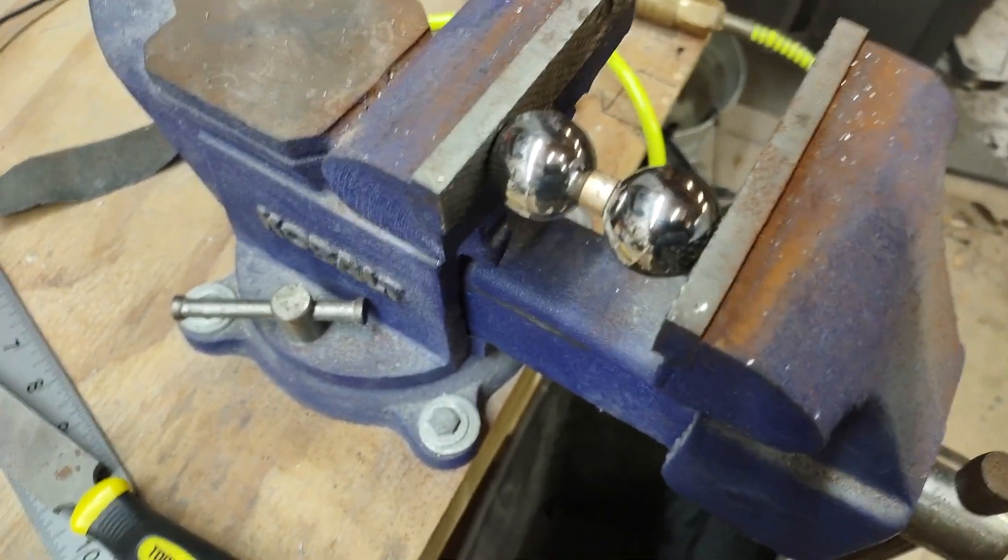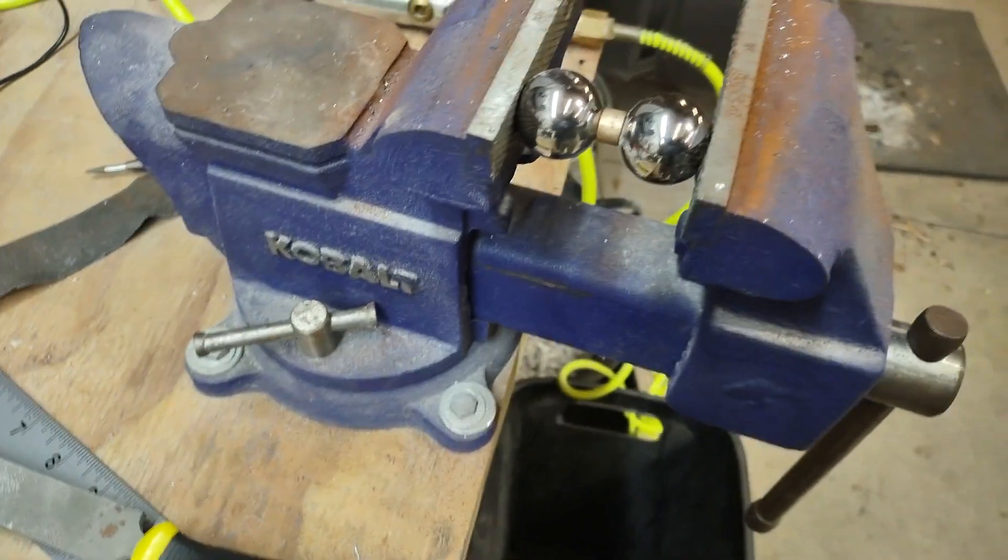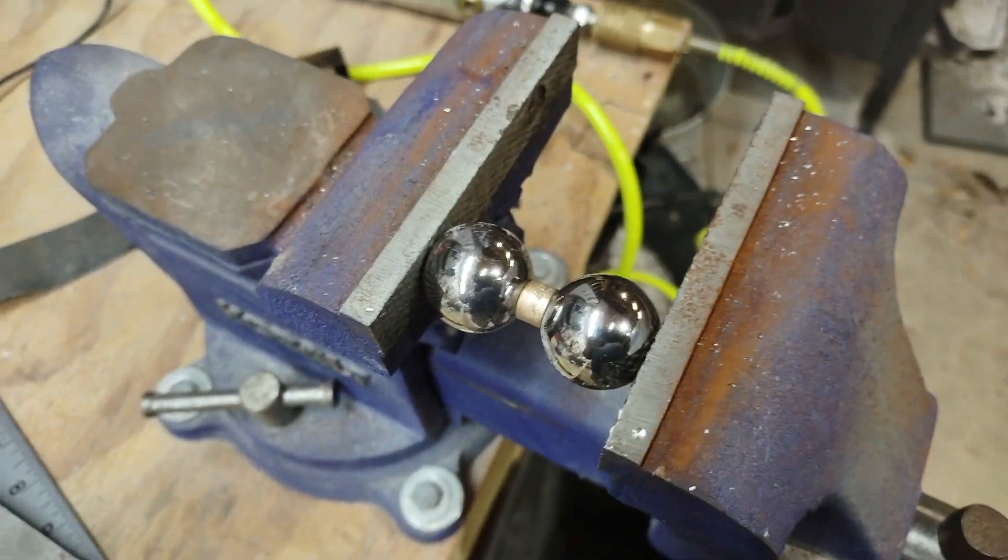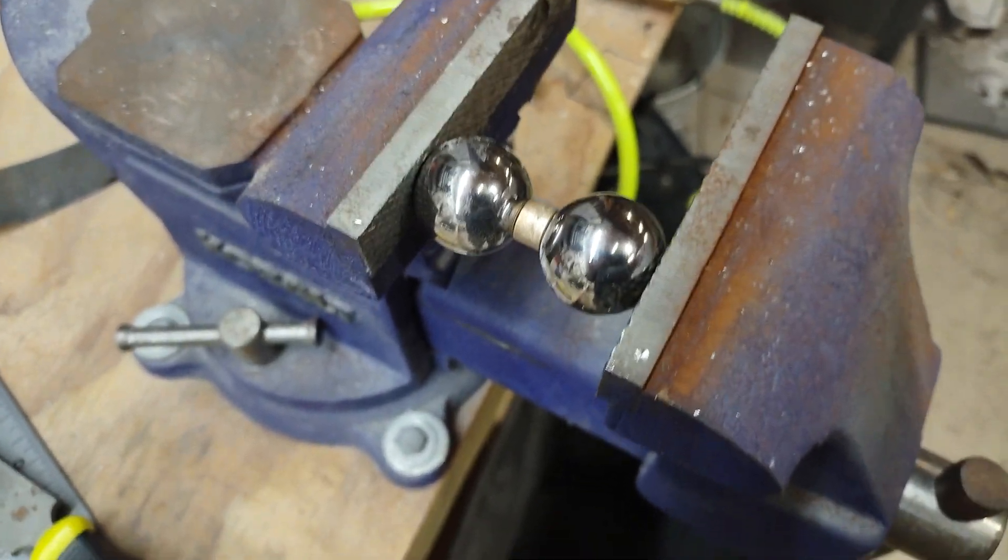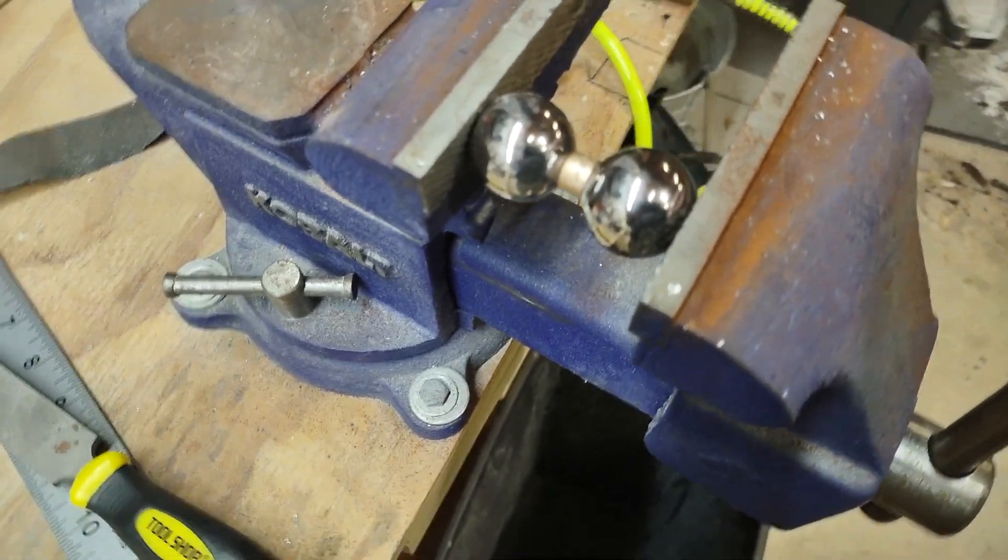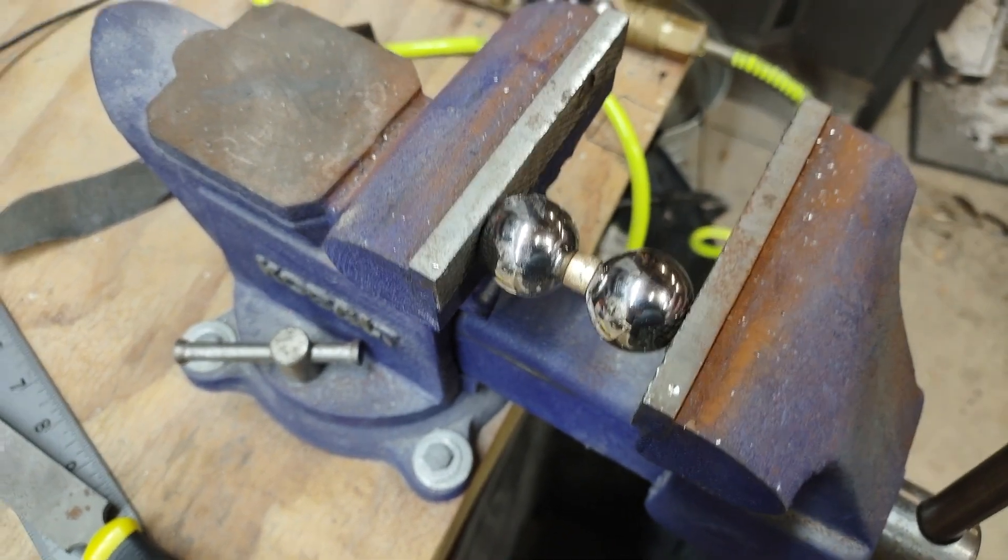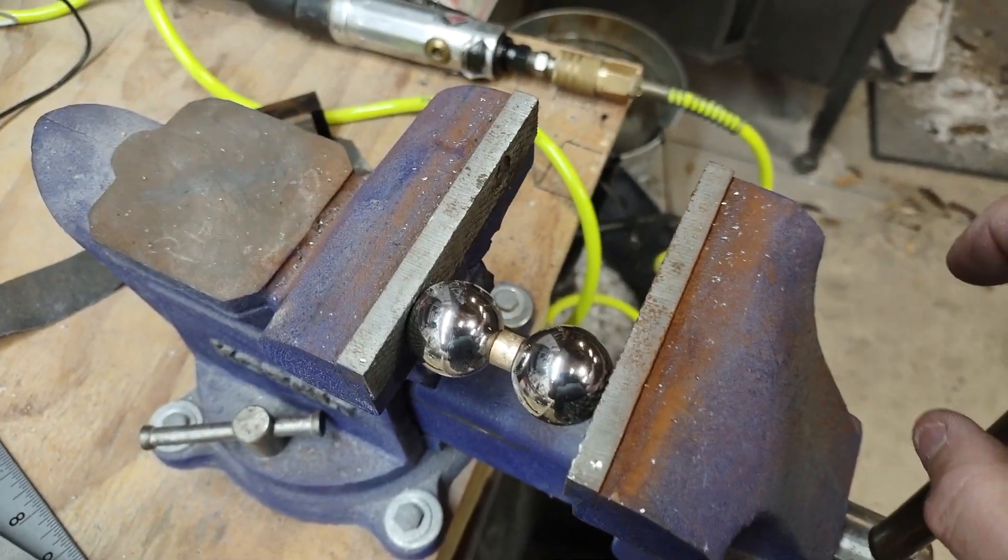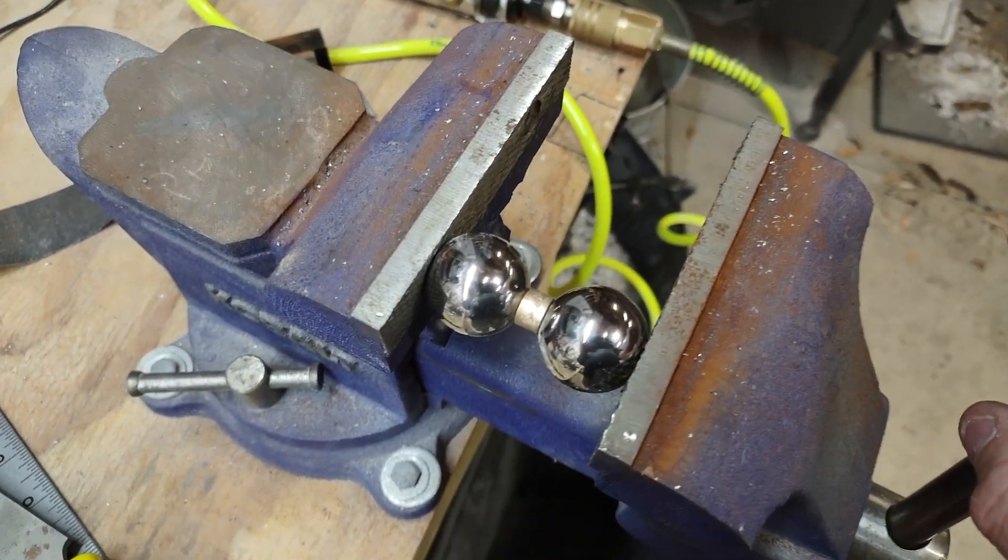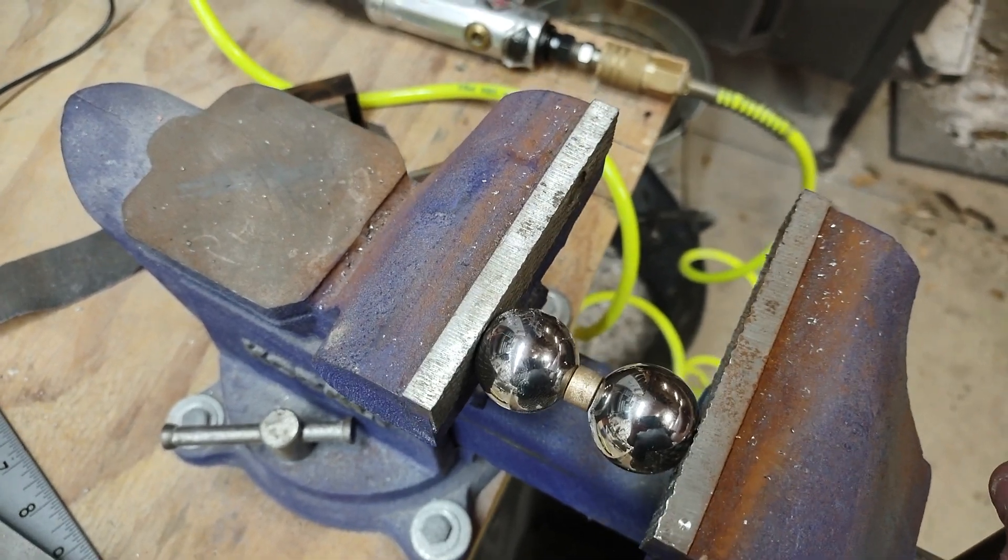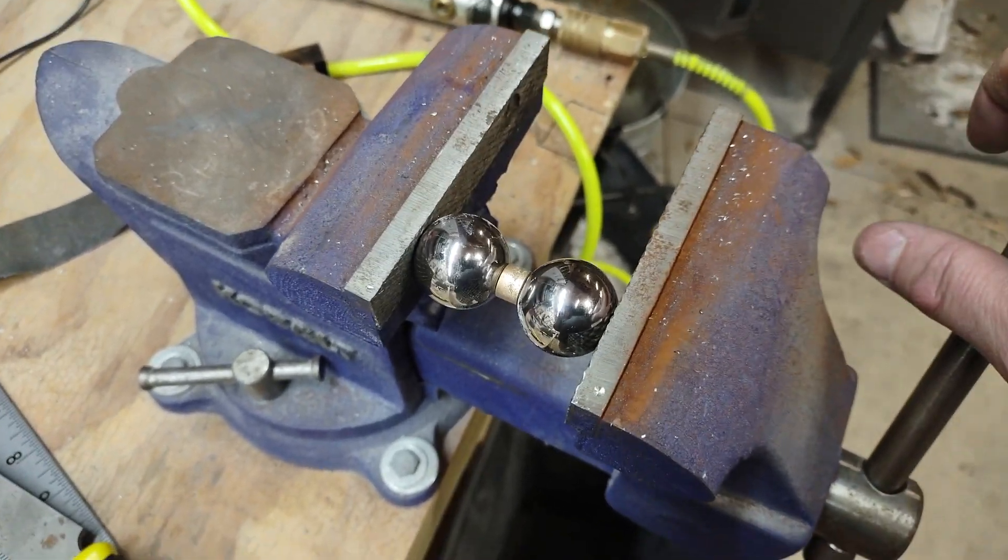Now your vise may vary. This is a cheapo and it's got a bit of flex in it once I actually start to squeeze, especially since it's off center here. But for my vise, it's about between 45 and 90 degrees before I start to see a good deformation in the right direction.